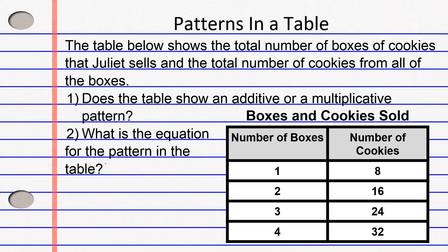To determine whether it is an additive or multiplicative pattern, we must answer the question: what do we have to do to the left side to get to the right-hand side? Are we going to add a number over and over again, or multiply the left-hand side number by the same number every time? Let's try the additive pattern first. Number of boxes is 1 — what do we have to do to 1 to get to 8? We could add 7. So 1 plus 7 equals 8.